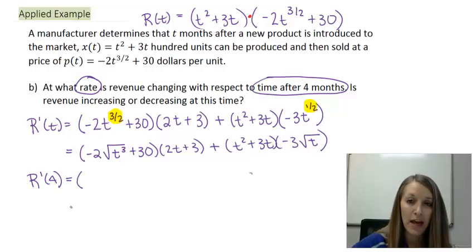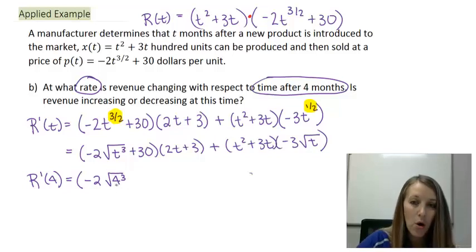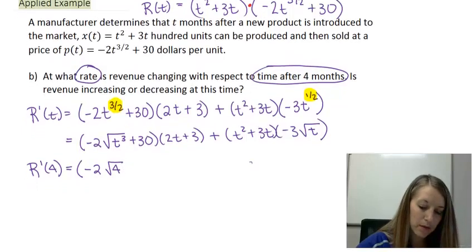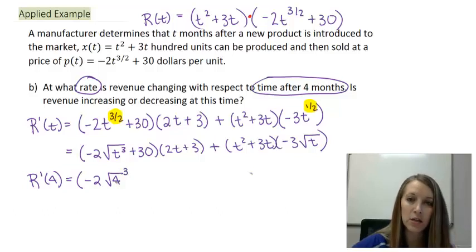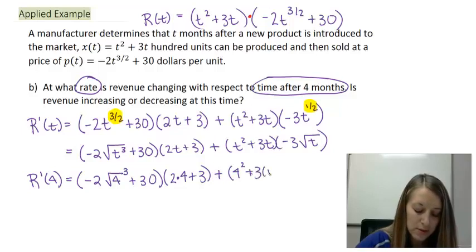Now if you choose to simplify it, that's perfectly fine. Don't be afraid to do that as well. So I have -2 times the square root of 4³. Now let me talk about this a little bit. The way it's written now is I would take 4 to the third power, so I would make it quite large, and then take the square root of it. But I can actually do that in reverse order. I can take the square root of 4 and then take it to the third power. So that means I'm going to make it smaller before I make it larger. And that should be easier to simplify it, especially if you don't want to have to utilize the calculator. Plus 30, multiply that by 2 times 4 plus 3 plus 4² plus 3 times 4 minus 3 times the square root of 4.